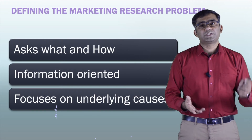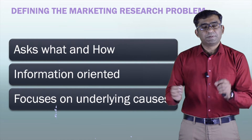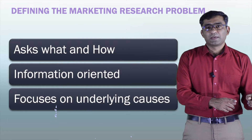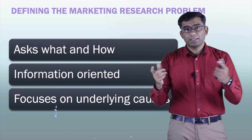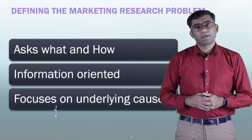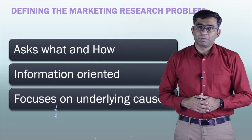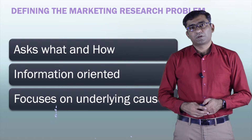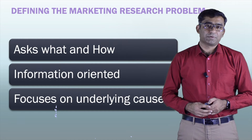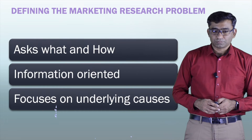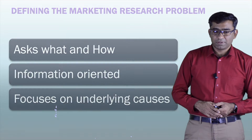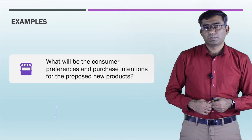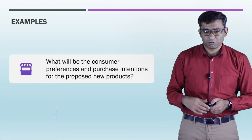To summarize: the management decision problem focuses on decision-making, is action-oriented, and focuses on symptoms. On the other side, the marketing research problem is about information — it is information-oriented, asks what and how, and mainly focuses on causes rather than just symptoms. This is the key difference between these two things.